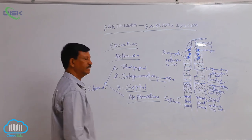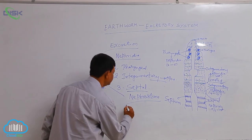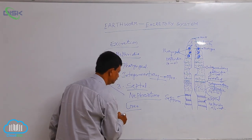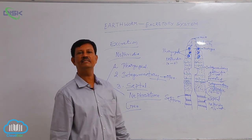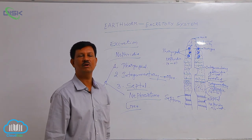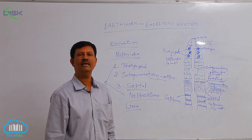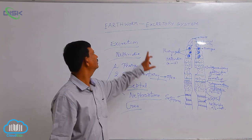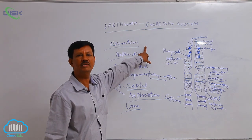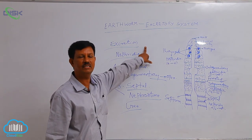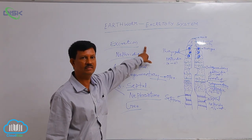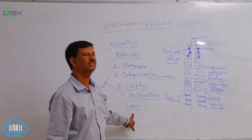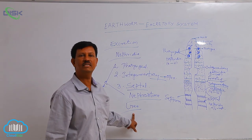The main excretory product is urea. Earthworm eliminates urea from the body, hence they are known as ureotelic animals — just like human beings, who also excrete urea and are known as ureotelic. Earthworm is also a ureotelic animal.